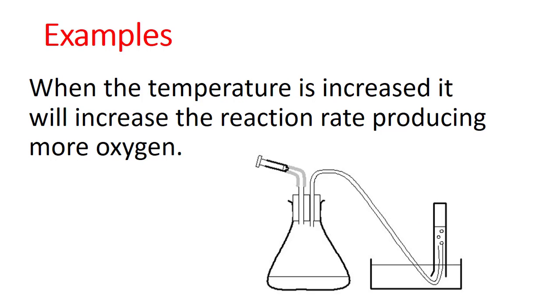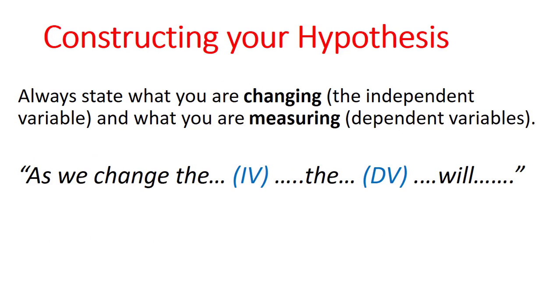Final example here. When the temperature is increased, it will increase the reaction rate producing more oxygen. So we're expecting the reaction rate to increase, but the thing that we're going to measure is the amount of oxygen. And we'll notice in each of those examples, both the independent and dependent variables. So the really critical step is to know your variables and include them in your hypothesis.